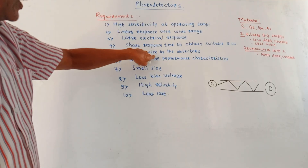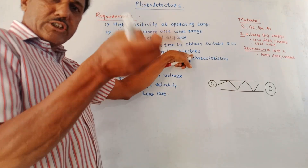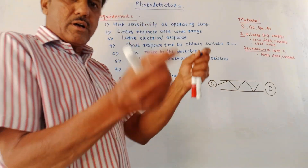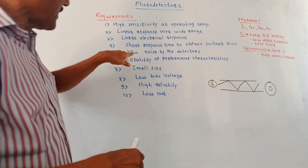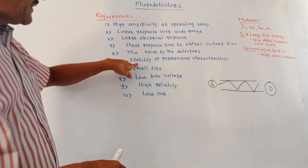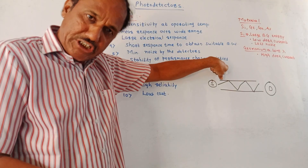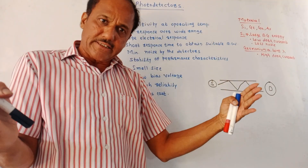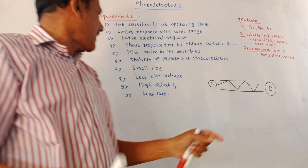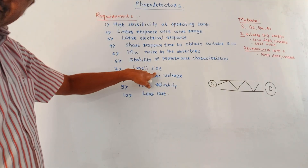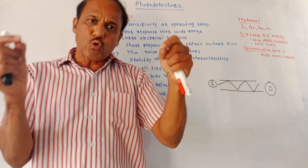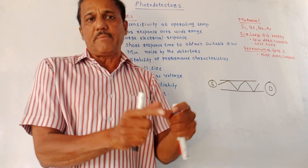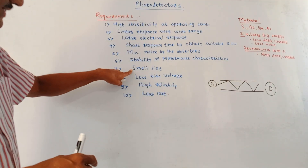There should be minimum noise produced by the detector at the output. This noise may contain dark current or other types of noise which reduce the signal quality. Then, stability of the performance characteristics — characteristics like output characteristics or transfer characteristics should be stable. Next, the detector should have a small size, since the diameter of the optical fiber cable is very small.